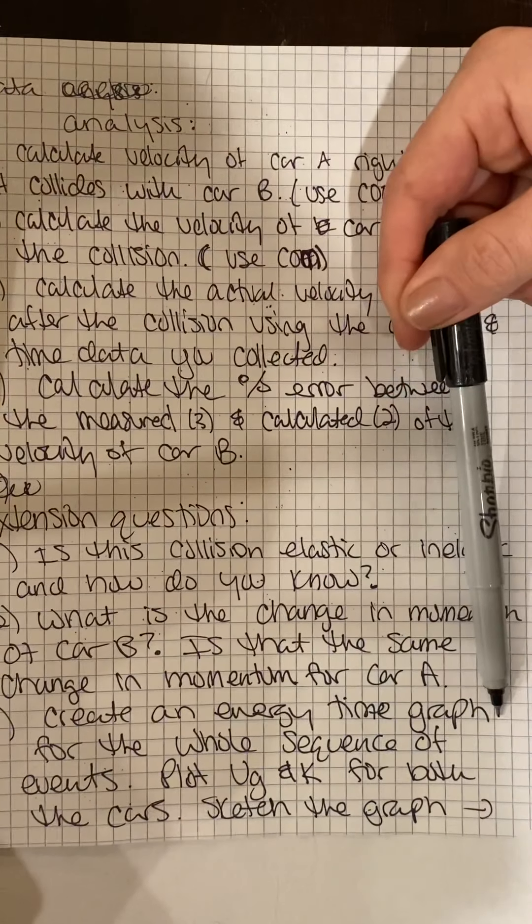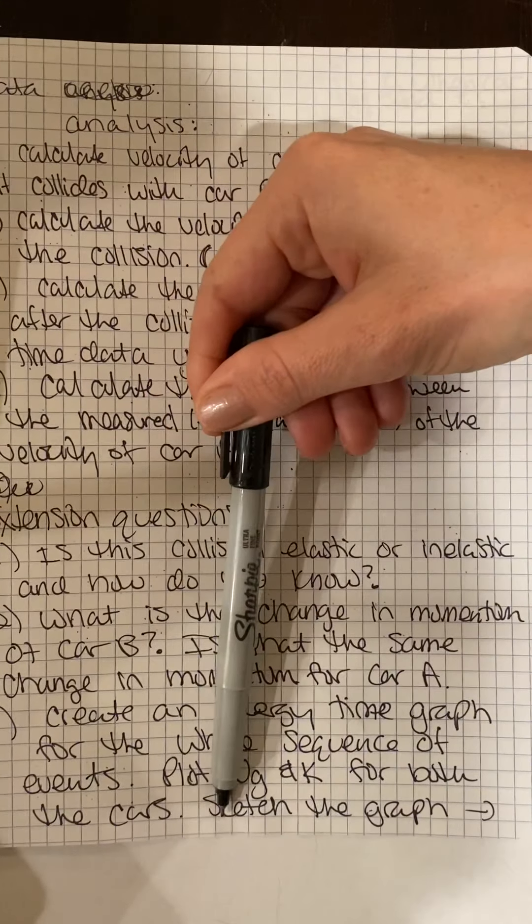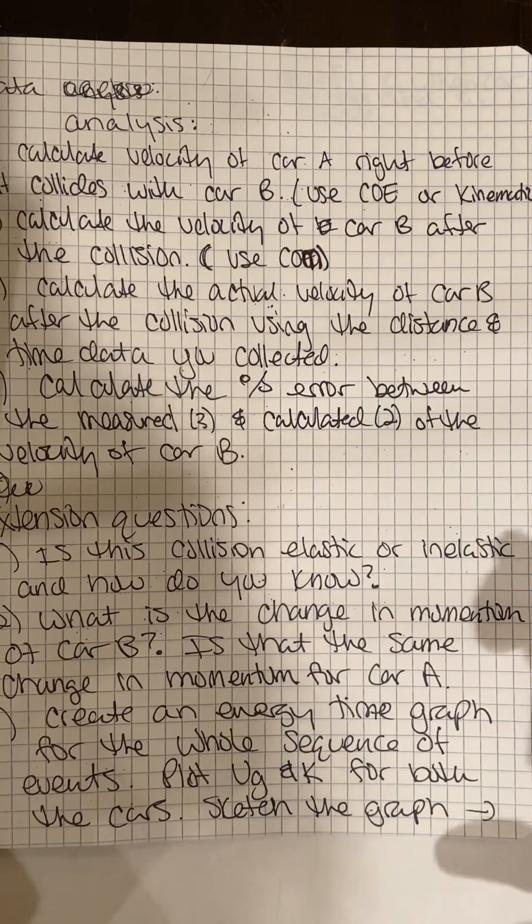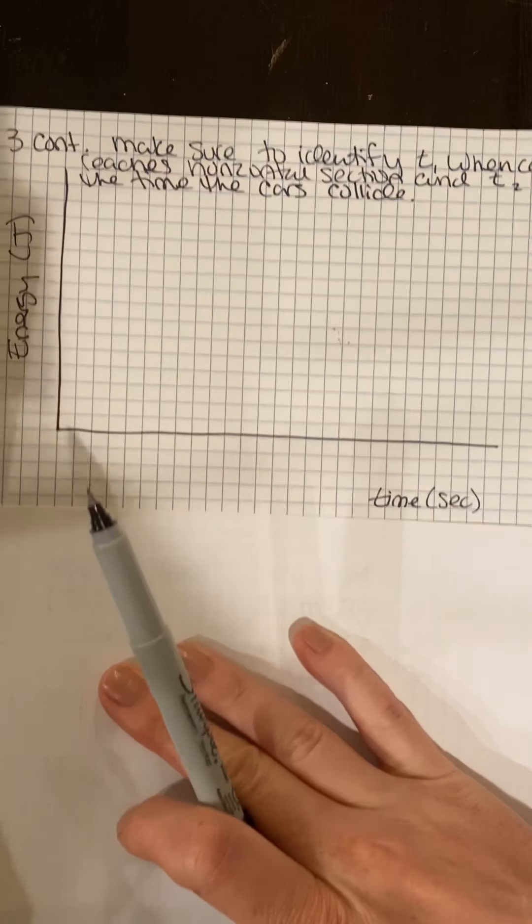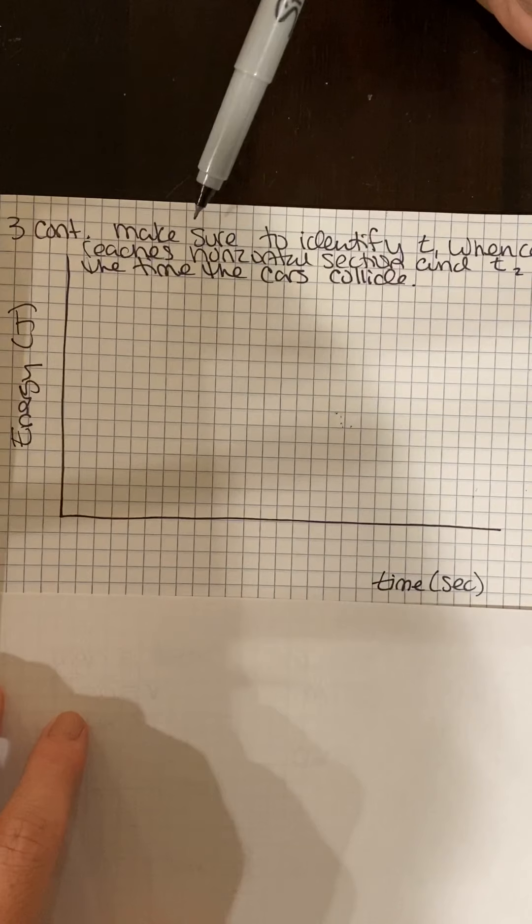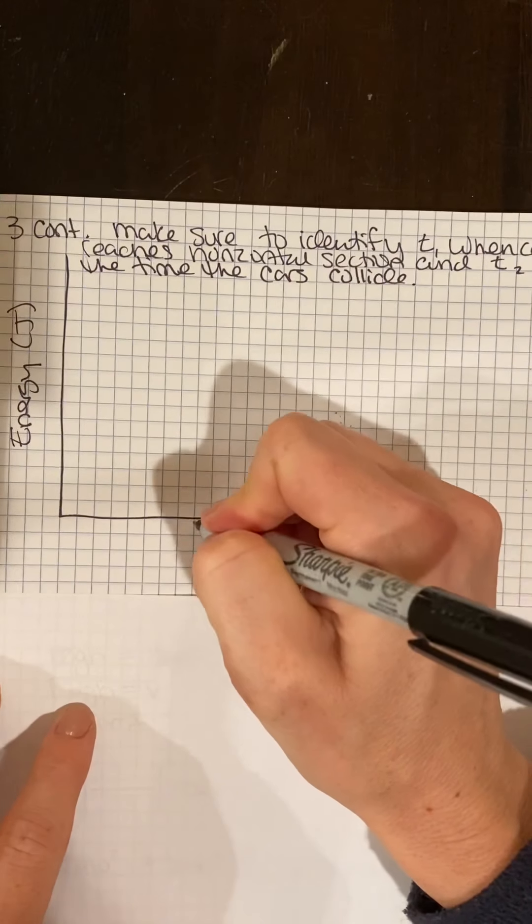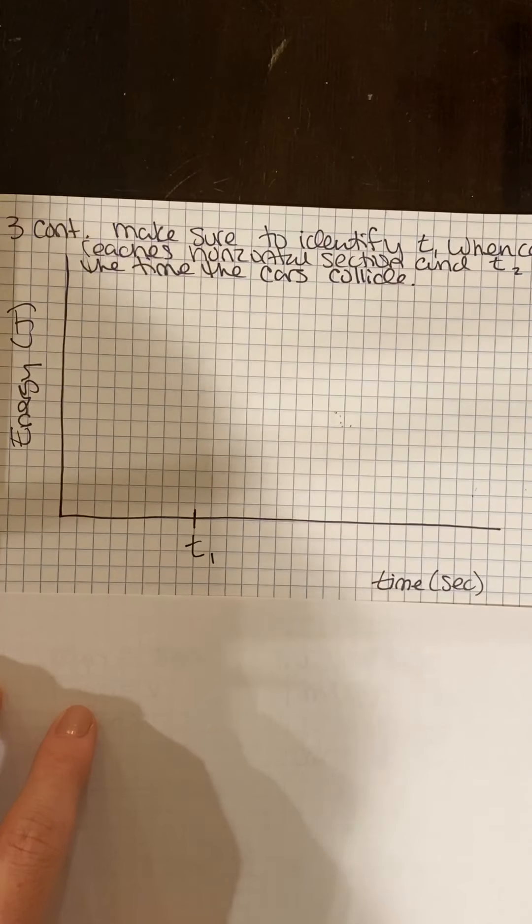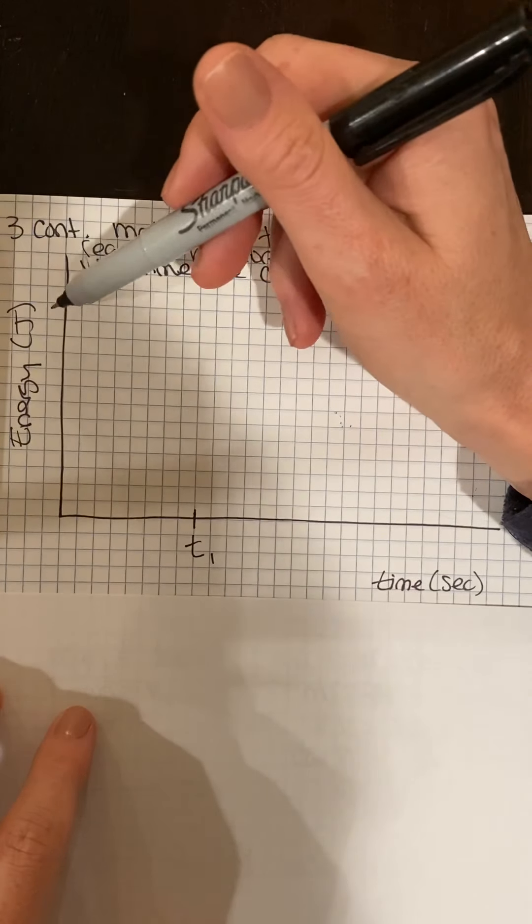Draw an energy time graph for the whole sequence of events. We're going to plot our gravitational potential energy and our kinetic energy for both the cars. We're going to sketch this graph. We want to put the time when the car reaches the horizontal section. So our first car, we'll just say at this time T1, our car A reaches this horizontal section. So what happens to the potential energy, what happens to the kinetic energy as the car's traveling down the track.